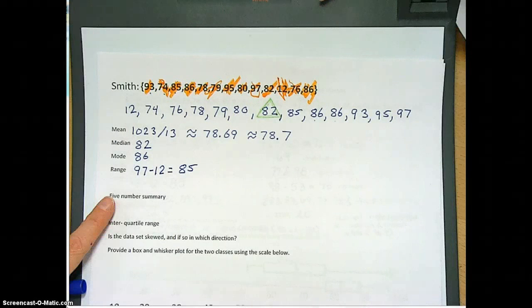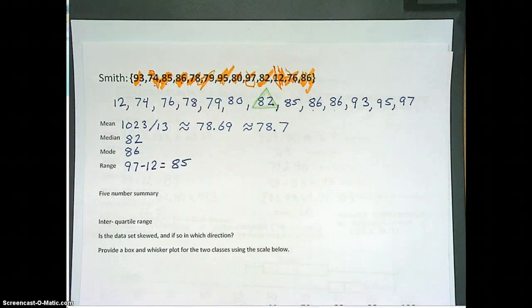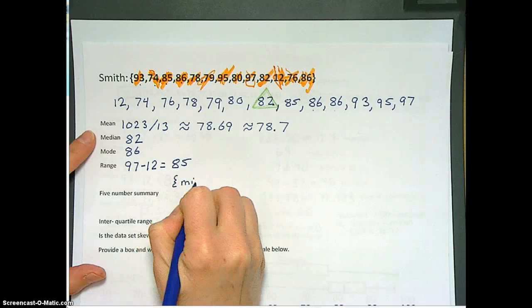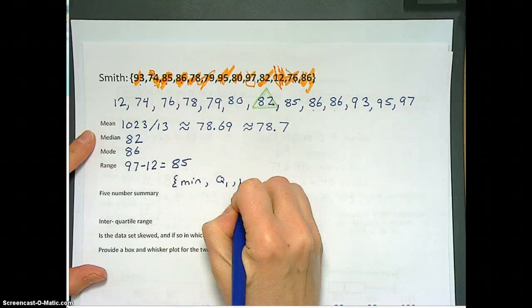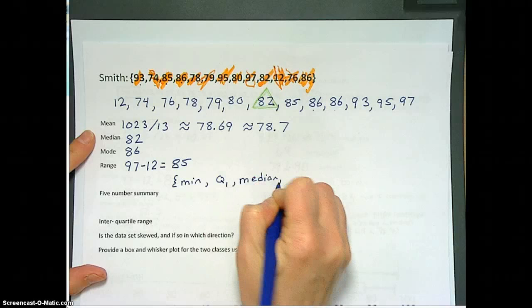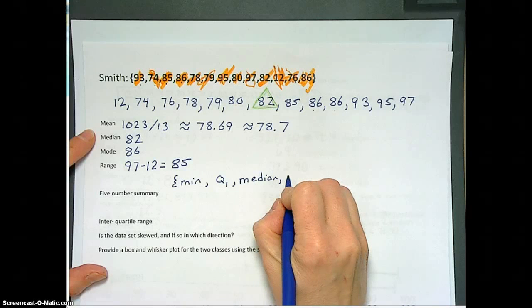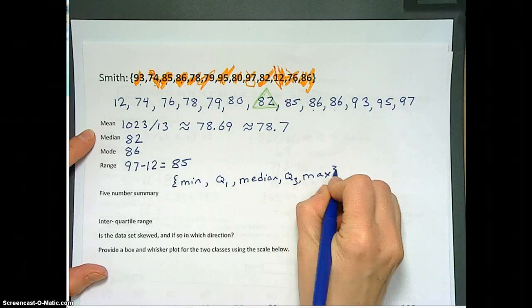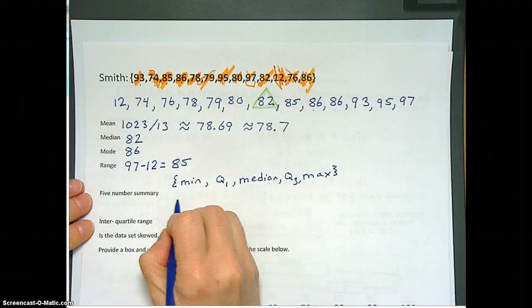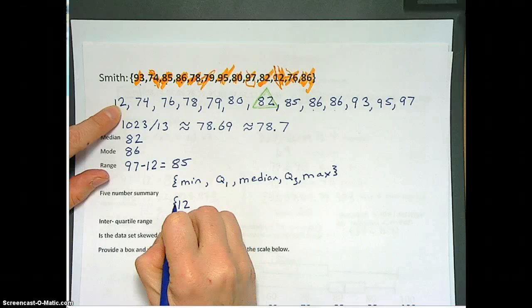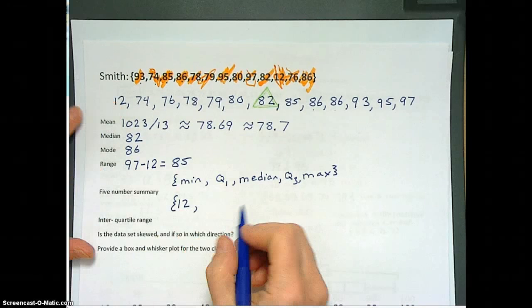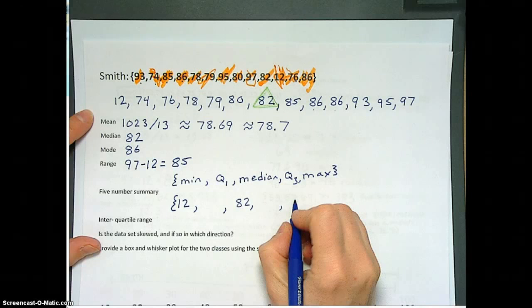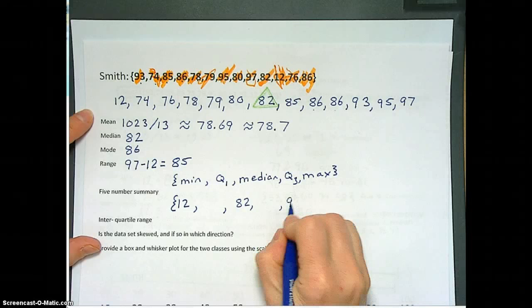Alright, now let's look at this thing called a five number summary. A five number summary is really what you need to make a box and whisker plot. But the five number summary includes the minimum score, the first quartile, the median, which is also the second quartile, but we reduced the fraction. It's a median, not a second quarter. The third quartile, and then the maximum. And they need to be in order with commas in brackets. So the minimum for this data set right here was the 12, the lowest score on the quiz.